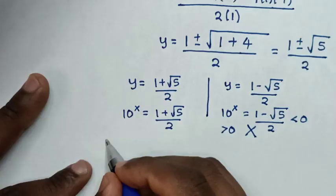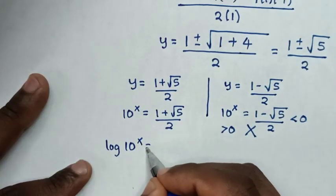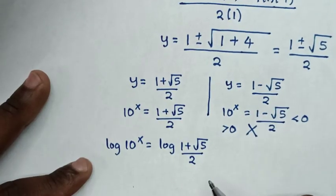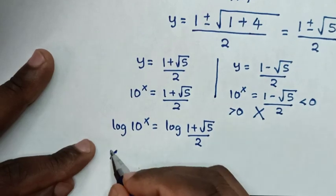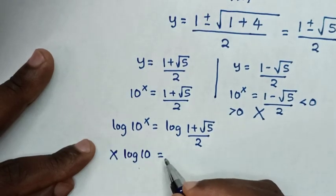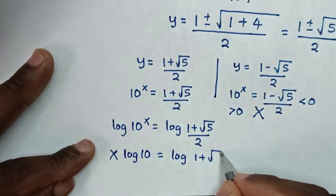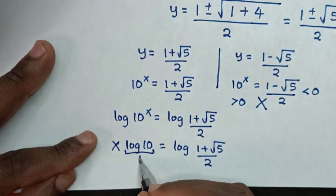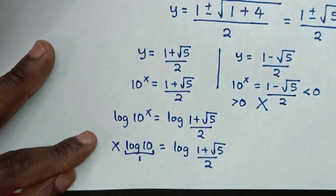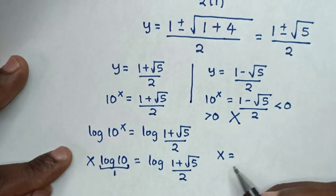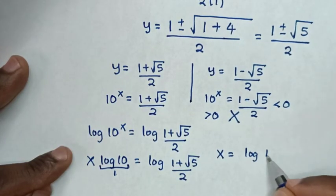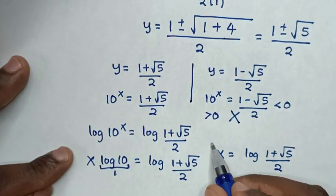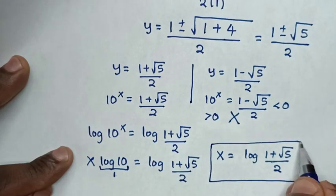We continue with the first solution and apply log to both sides: log(10^x) equals log((1 + √5) / 2). The exponent x moves to the front, giving x times log(10) equals log((1 + √5) / 2). Since log(10) equals 1, we get x equals log((1 + √5) / 2), which is the value of x in terms of logarithm.